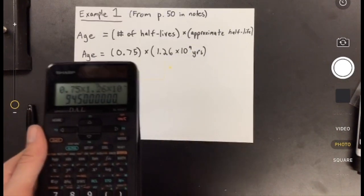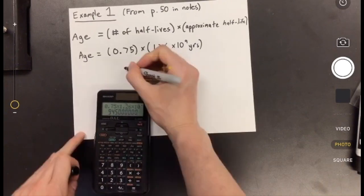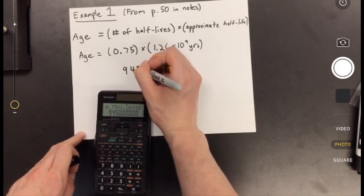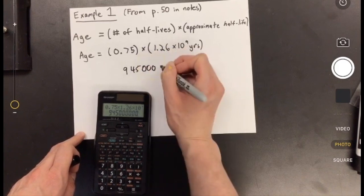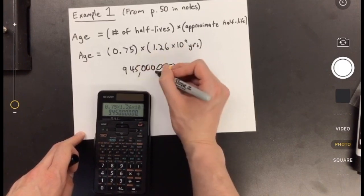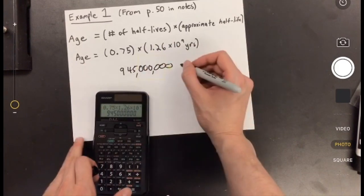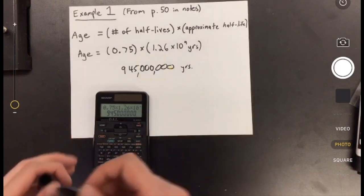And there we go. That's the same answer we got in the video, right? So that was 945,000,000 or 945 million. Be careful counting out your zeros, because we're dealing with big numbers here, right? A lot of the time we're dealing with very old stuff.